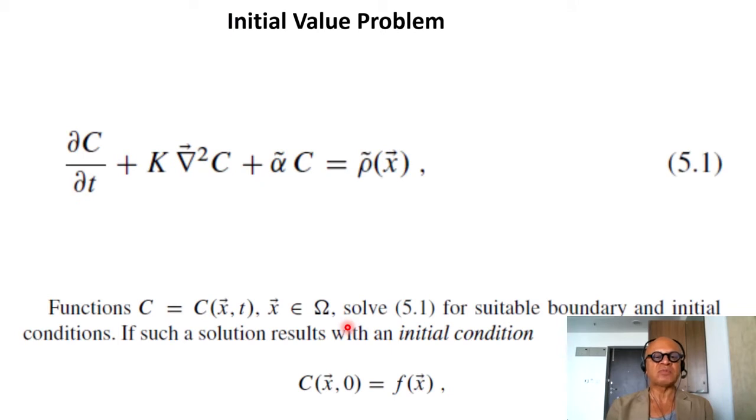So the initial value problem then basically becomes constant k, as an example: del c dt plus k grad squared c plus alpha tilde c equals rho tilde x, function of x. Functions c equal to c, a function of space and time, where x belongs to domain omega, can be a solution of this in a very general form, but we need suitable boundary conditions and initial conditions.